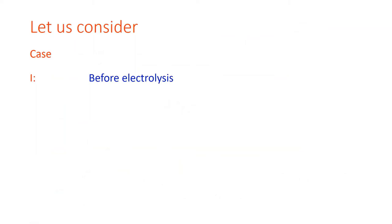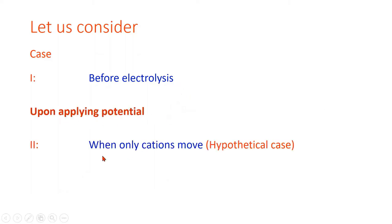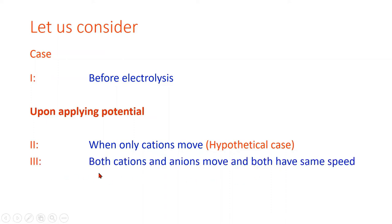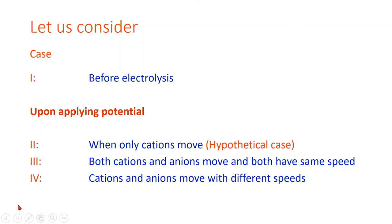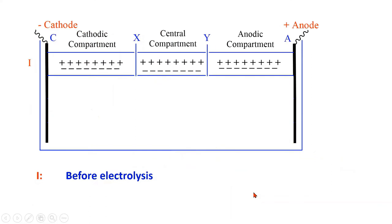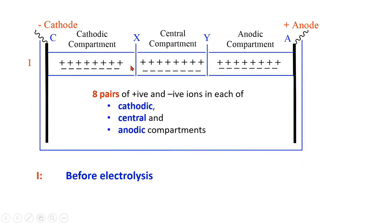Let us consider various cases. Before electrolysis, represented as case one, there are eight pairs of positive and negative ions in each of the cathodic, central, and anodic compartments. Case two is a hypothetical case when only cations move. Case three is when both cations and anions move and both have the same speed. Case four is when cations and anions move with different speeds.